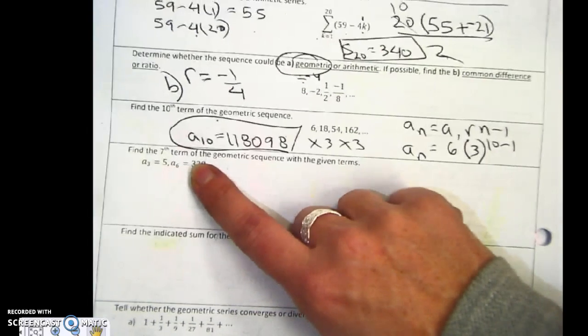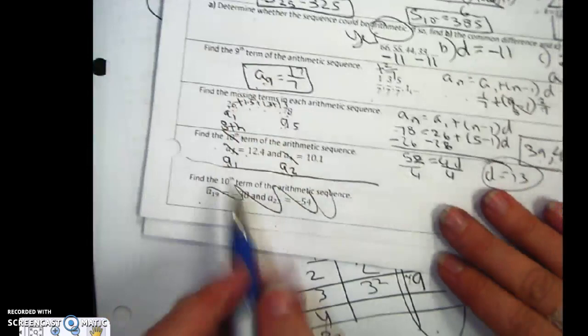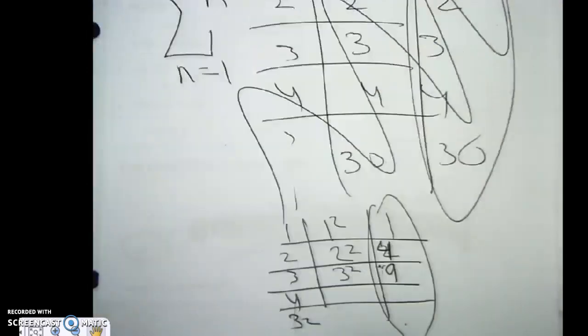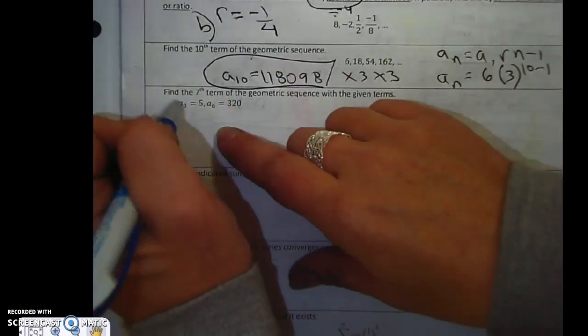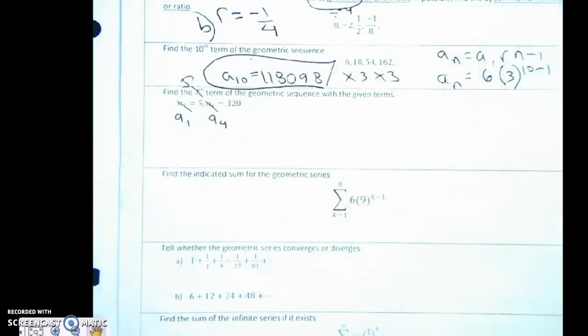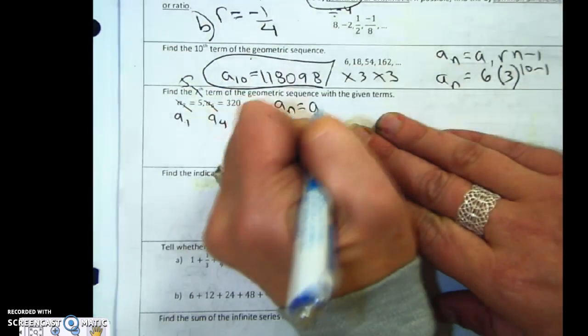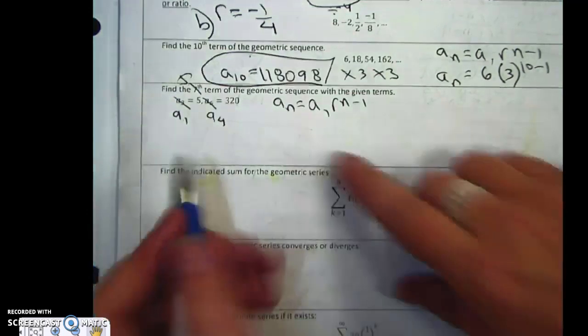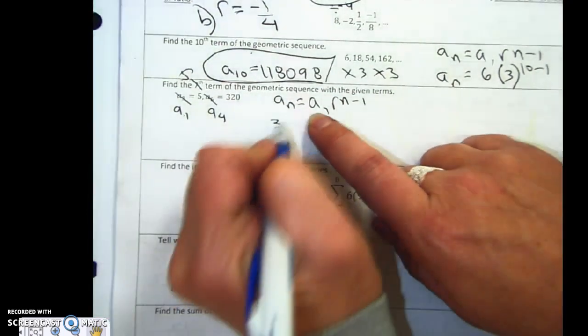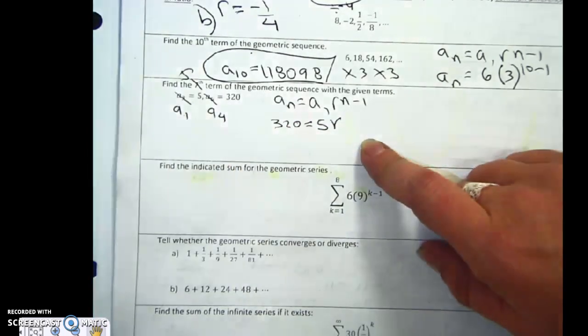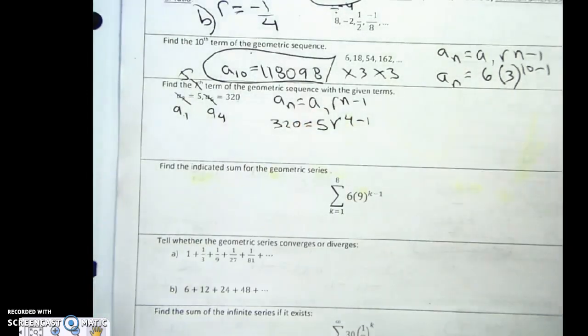Find the 7th term of the geometric sequence. This question is exactly like the earlier question where you don't have a first term, so you had to fake it. I'm going to play the same game and fake it. This will be my first term, 2 back, 2 back, 2 back. It's geometric. a sub n equals a1 r to the n minus 1. I'm going to use my fourth term. So 320 equals my first term times my ratio. If I knew my ratio, life would be easier. 4 minus 1.